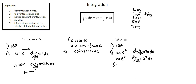Now I will set up my integration by parts equation. The integral of u times dv — in our case, u is x squared and dv is e to the power of x dx — equals u times v.